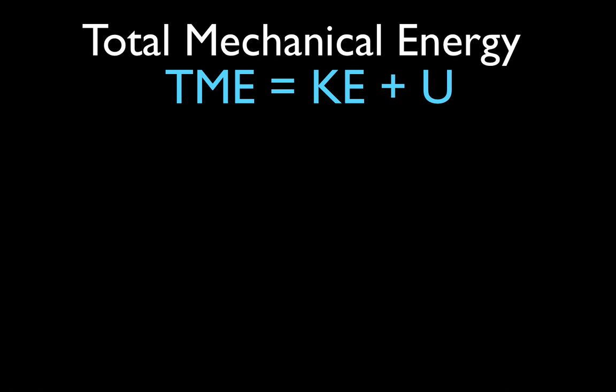So if you want to know the total mechanical energy of an object, simply add its kinetic energy and its potential energy. I like to abbreviate total mechanical energy as TME. Sometimes you will see it as just a capital E, but since we're talking about mechanical energy, I use TME.